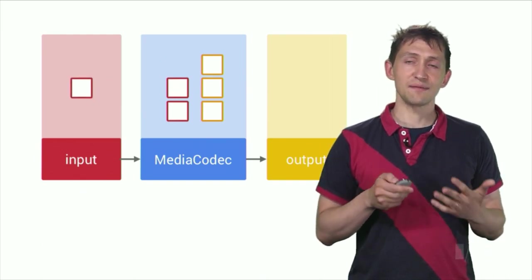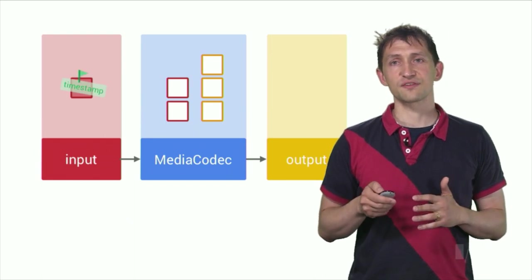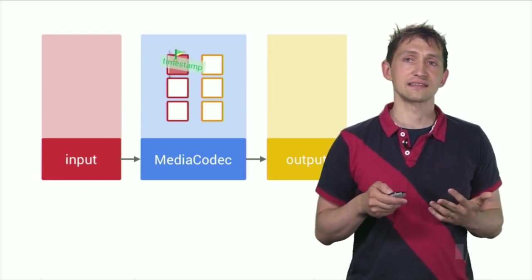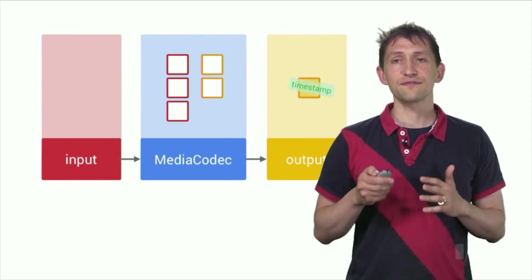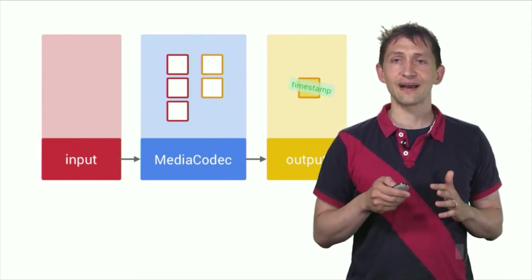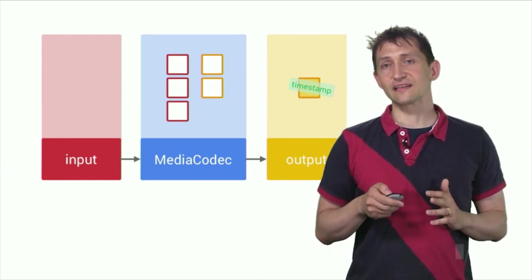You get the index of an empty input buffer by calling dqInputBuffer. You can then fill the buffer with data, apply a timestamp or flags, and send it to the codec using qInputBuffer. To get a filled output buffer, call dqOutputBuffer to get its index. Note how the timestamp is propagated from the input buffer.